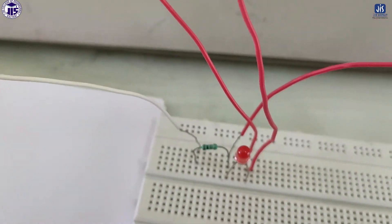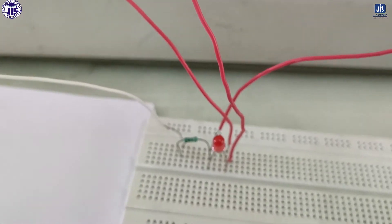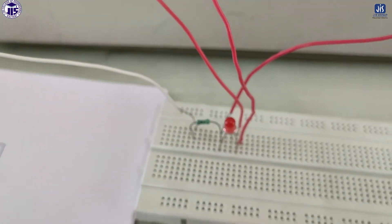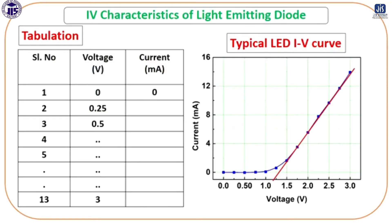We have to increase the voltage at the source. As the source voltage increases, the threshold voltage will be reached and the LED will start glowing. Looking at the I-V characteristics graph — with current on the Y-axis and voltage on the X-axis — when voltage increases, for the first few points you get no current. Then after some voltage, the current starts increasing. This point where current starts increasing is called the threshold voltage, also known as the cut-off voltage or avalanche breakdown voltage.